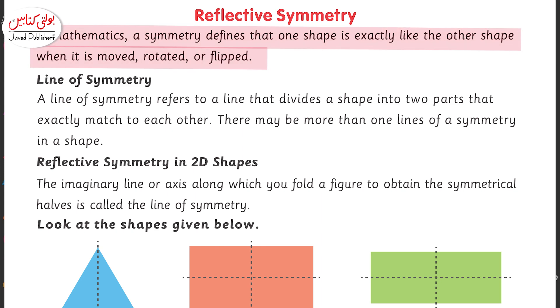The line of symmetry refers to a line that divides a shape into two equal parts that exactly match each other. There may be more than one line of symmetry in a shape.